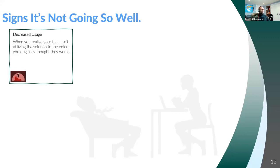The first sign that comes to mind is decreased usage — when you realize your team isn't utilizing the solution to the extent you originally thought they would. An example: we went out and bought this fancy CRM system, but we've still got team members relying on Microsoft Excel to keep track of their contacts, clients, or donors. We invested in the solution and made that organizational decision, but we're still relying on this other solution that doesn't really tie into the overall strategy. That's not a good sign.